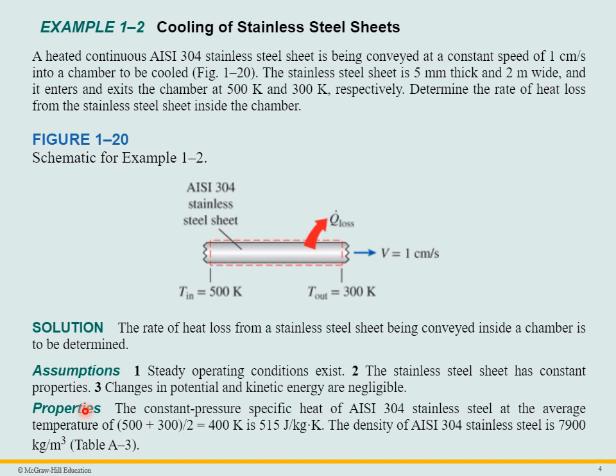So first of all, we can make some assumptions here with steady state operating conditions, constant properties. We can find the average temperature for the stainless steel. It'd be 500 plus 300 divided by two, 400 K. We can look up the specific heat in the appendix, table A3.